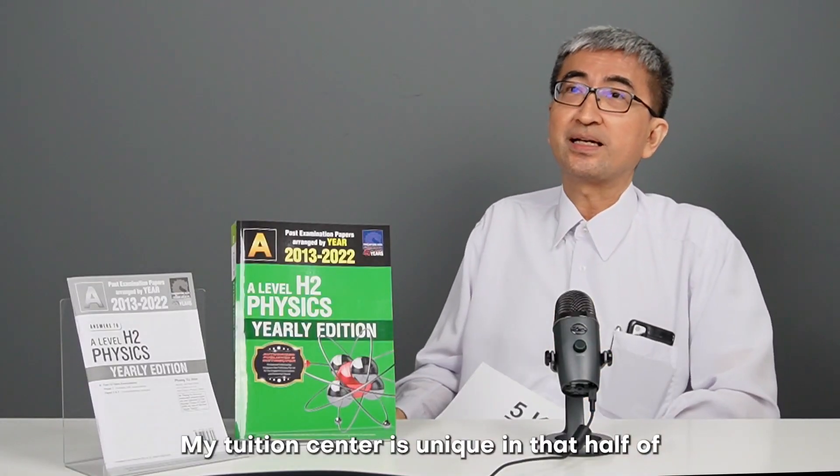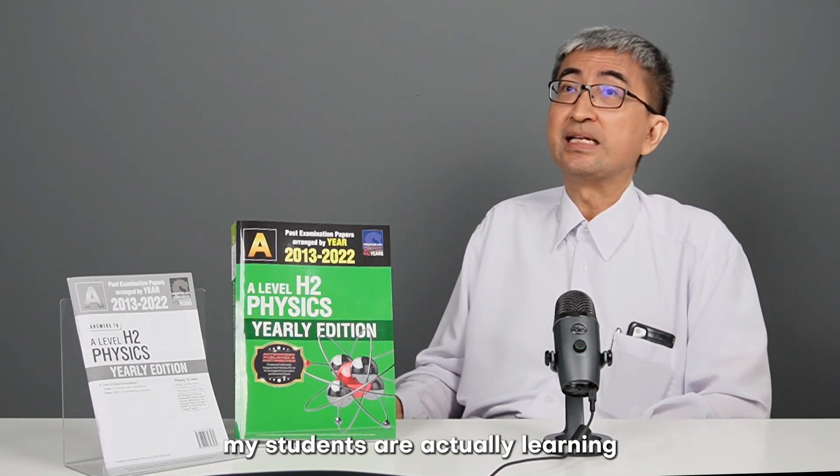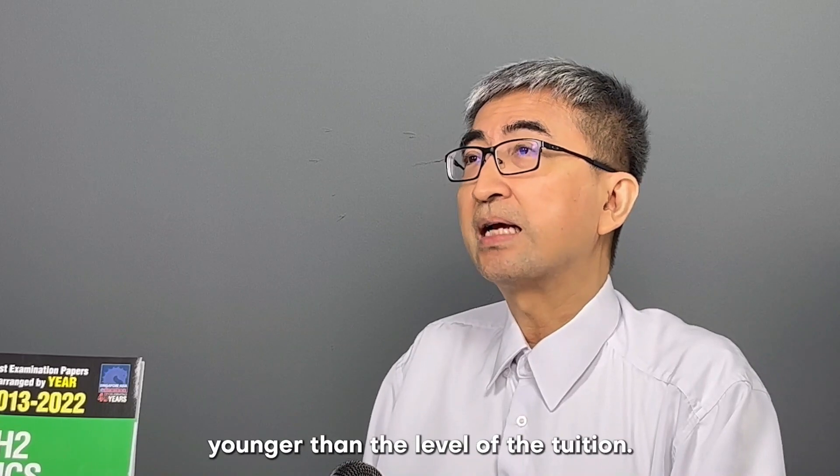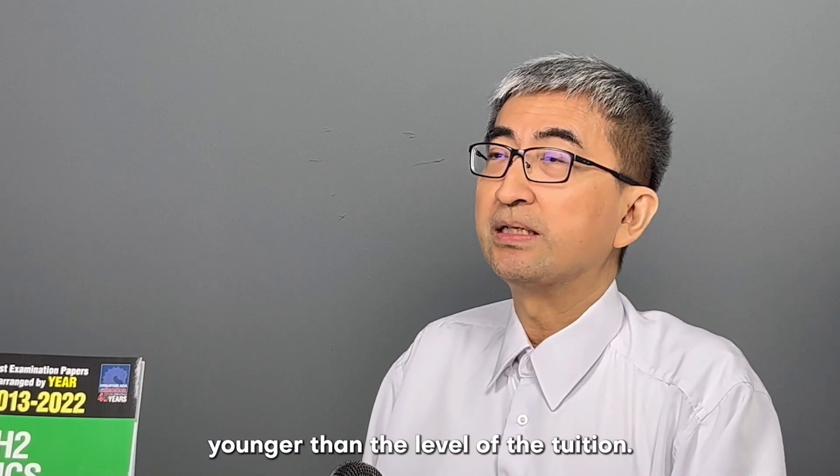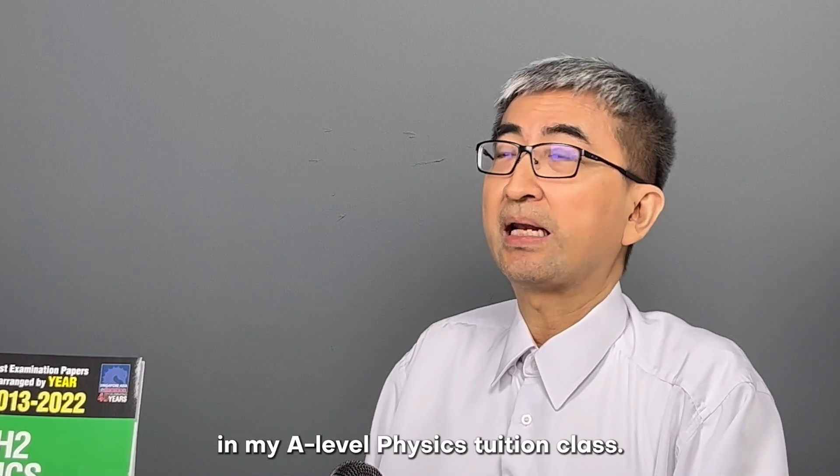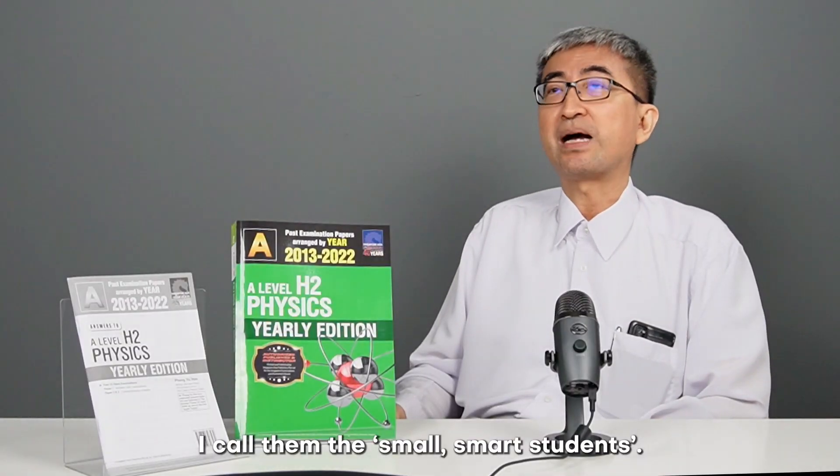My tuition center is unique in that half my students are actually learning ahead of their school syllabus. So they are several years younger than the level of tuition. For example, I have secondary school students in my A-level physics tuition class. I call them the small, smart students.